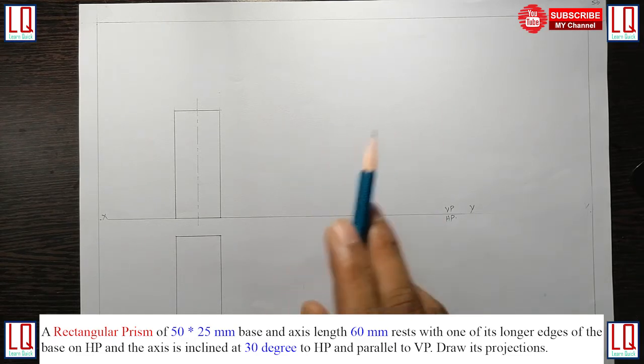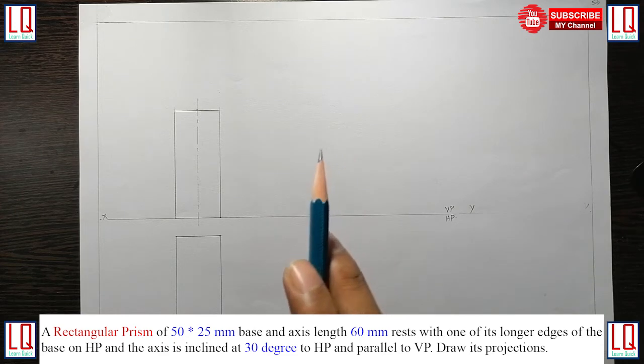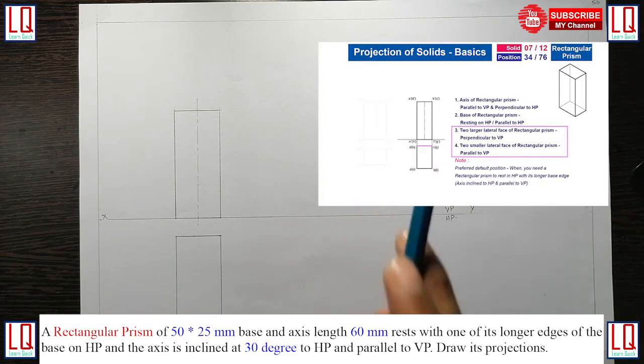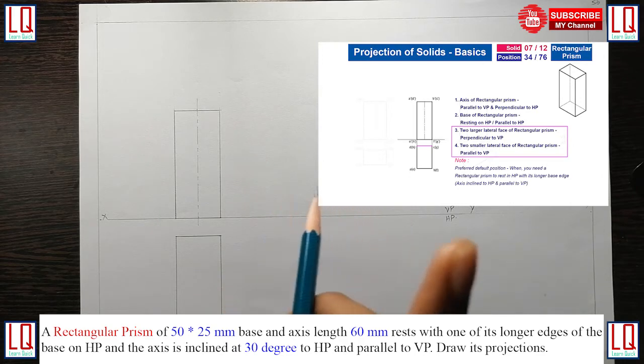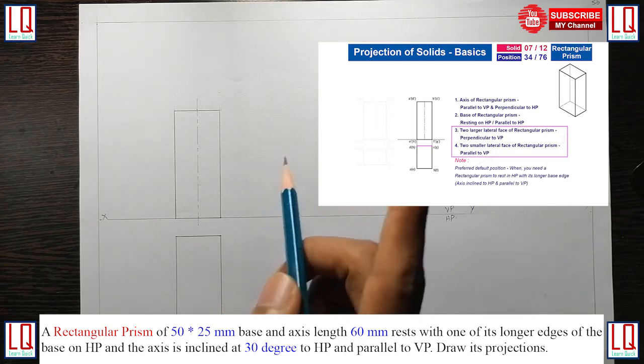To draw this problem, we need to refer our previous video lecture Projection of Solids Position Number 34 of Solid Type 7. To view the video, the link is available in the top right corner and in the description.